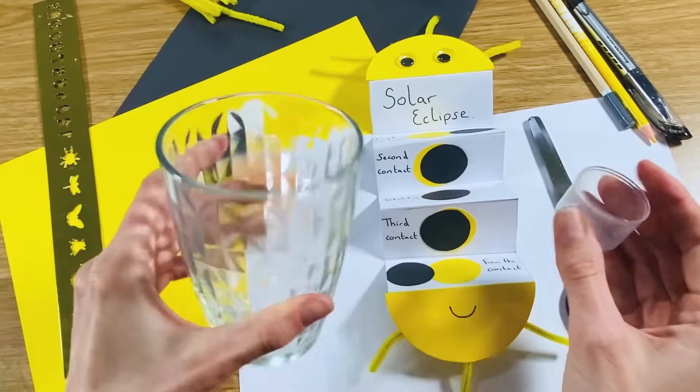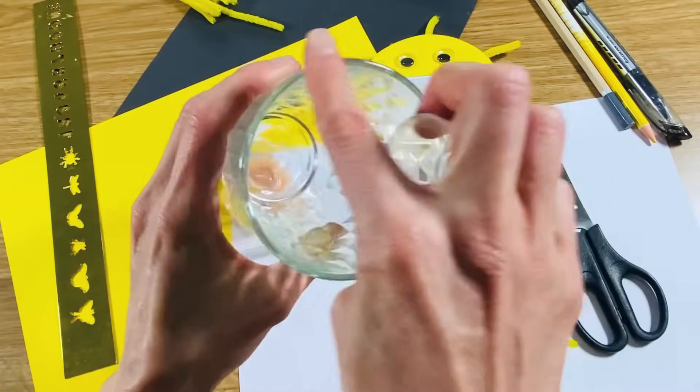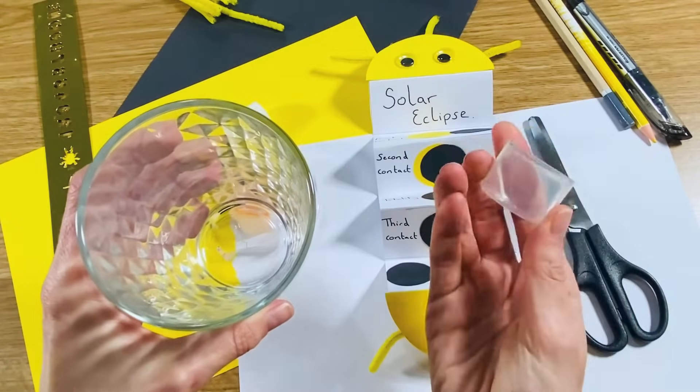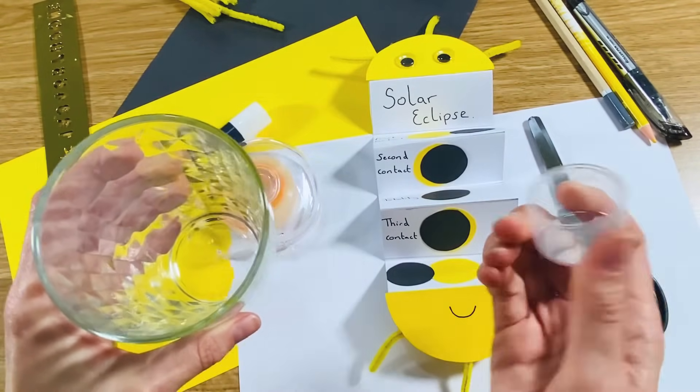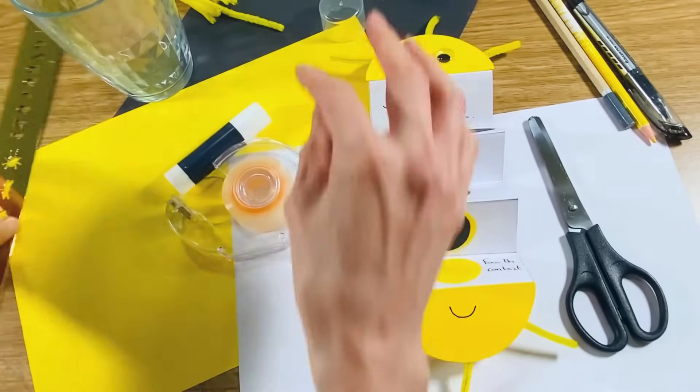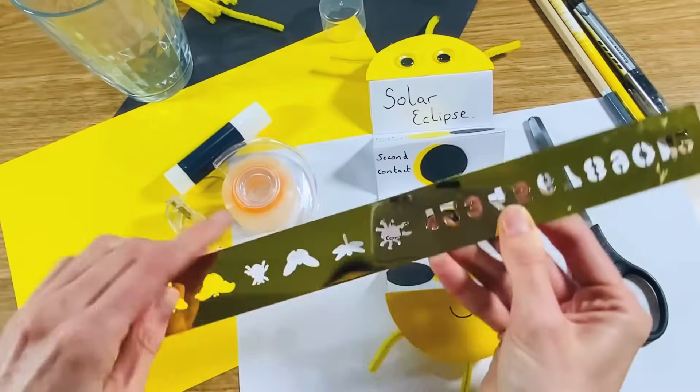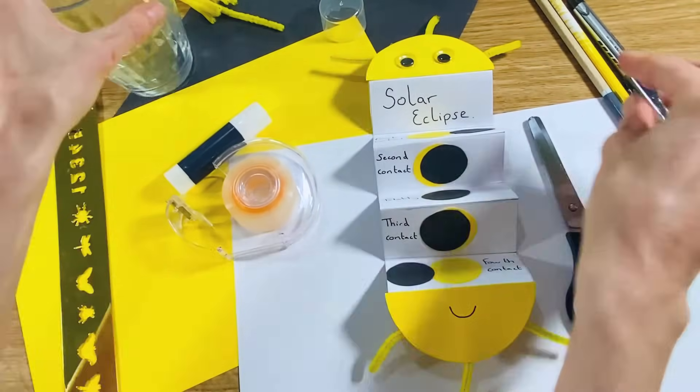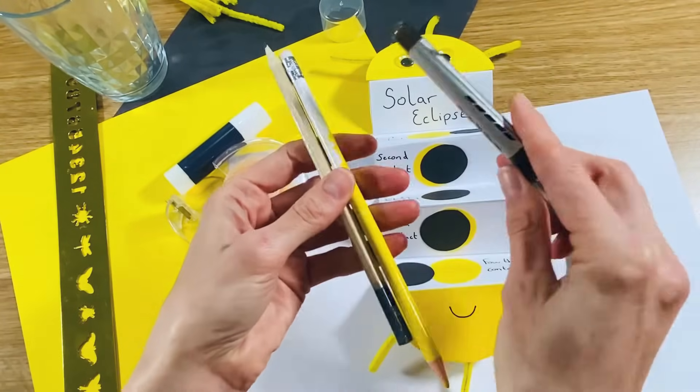Some round things to draw around, so I've got one large one which is a glass and then a smaller one which is a lid, but you could also use something like a coin for that. A ruler, a pencil, and a pen.